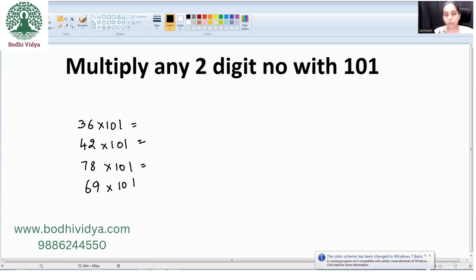This is quite a common question which arises in many competitive exams as well. So, any number, say we take it as AB, AB into 101, the answer will be AB, AB. Any two-digit number is going to repeat twice. That is the final answer.